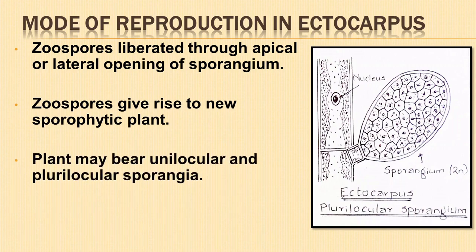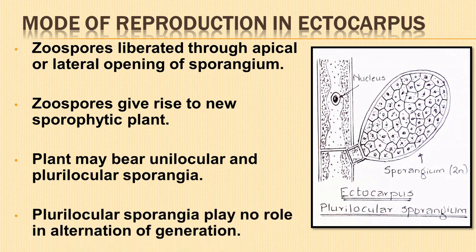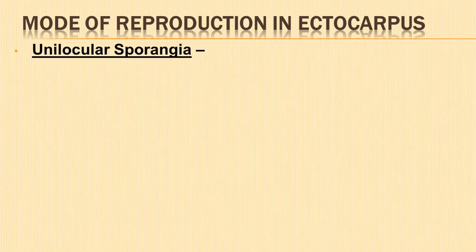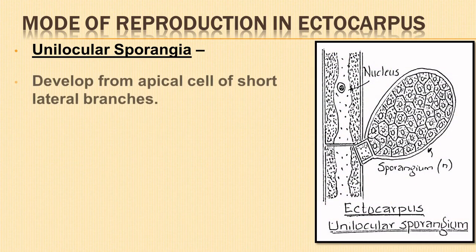These plants bear unilocular and plurilocular sporangia. The plurilocular sporangia has no role in alternation of generation.